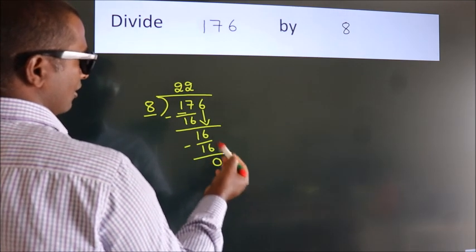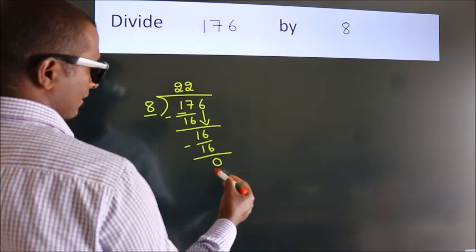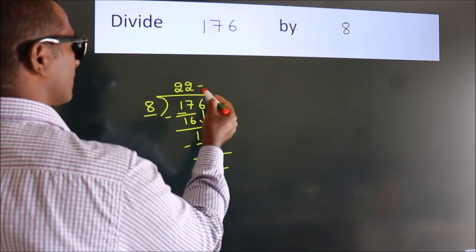After this, no more numbers to bring down, and we got remainder 0. So this is our quotient.